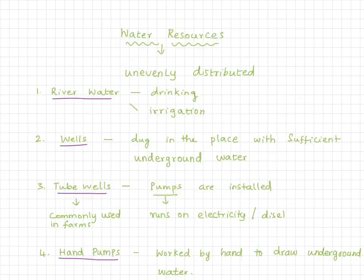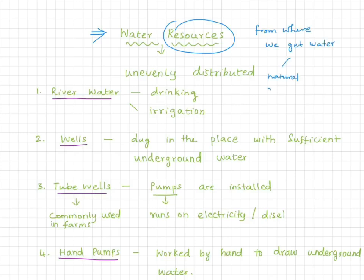Secondly, in this session we are going to see some water resources. Number one: river water, or flowing water, which is good for drinking and irrigation.